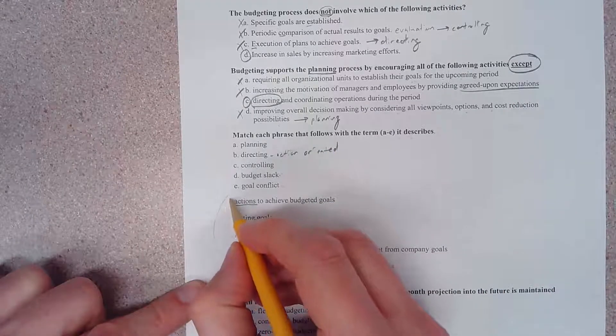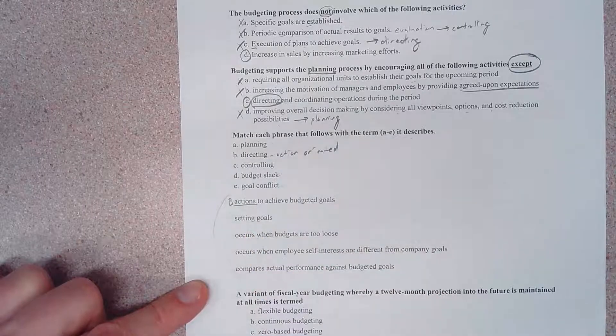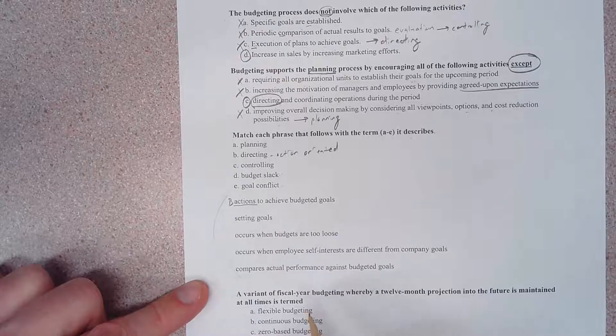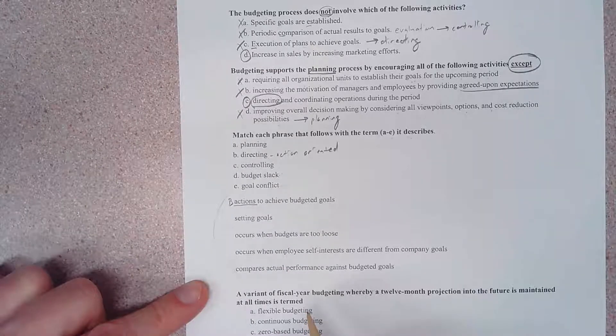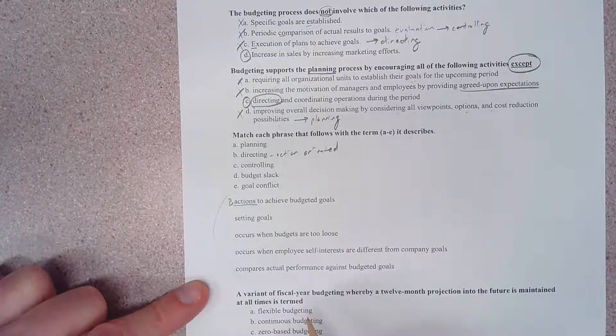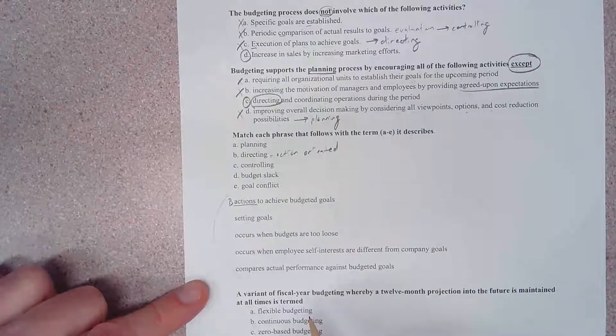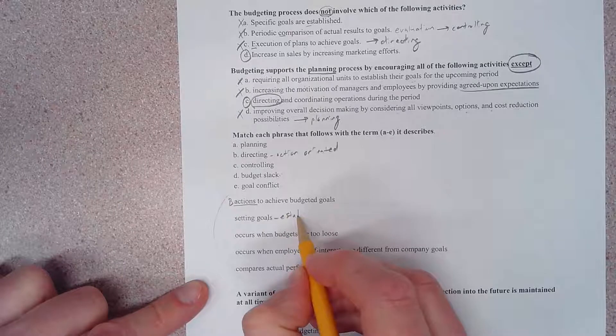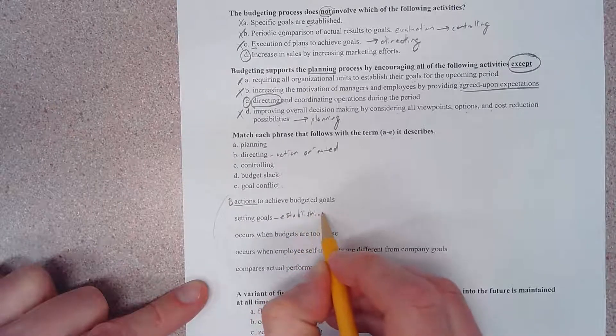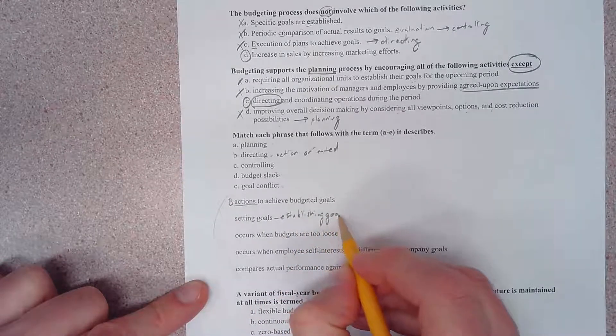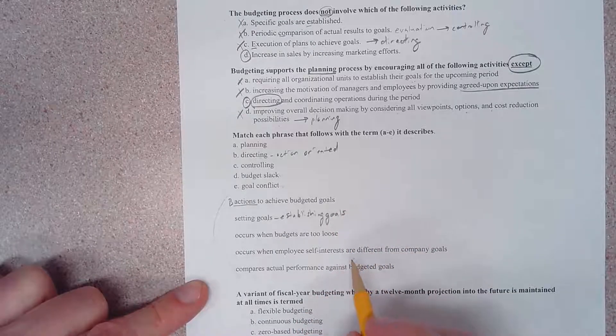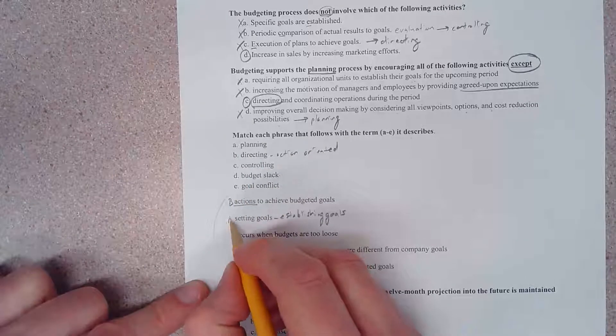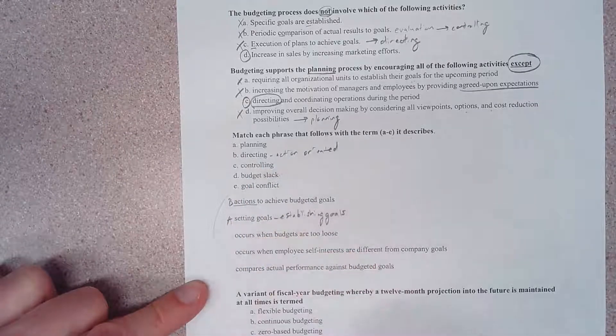So the first one is going to be B. Setting goals or establishing goals is going to be a part of - what do you think? A, B, C, D, or E? Establishing goals is the first of the three E's and it is associated with the planning process. So that's going to be choice A.